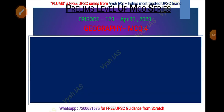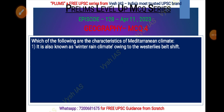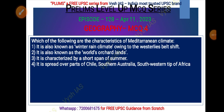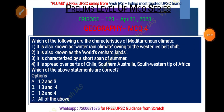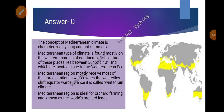The fourth question: which of the following are characteristics of the Mediterranean climate? Statement one: it is also known as winter rain climate owing to the Westerlies belt shift. Statement two: it is also known as the world's orchard lands. Statement three: it is characterized by a short span of summer. Statement four: it is spread over parts of Chile, southern Australia, and the southwestern tip of Africa. Options: one and two, one two and three, one three and four, one two and four, or all of the above.